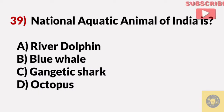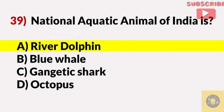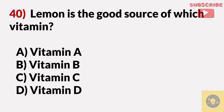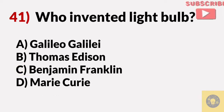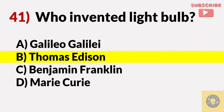The national aquatic animal of India is? Answer A, River dolphin. Lemon is a good source of which vitamin? Answer C, Vitamin C. Who invented the light bulb? Answer B, Thomas Edison.